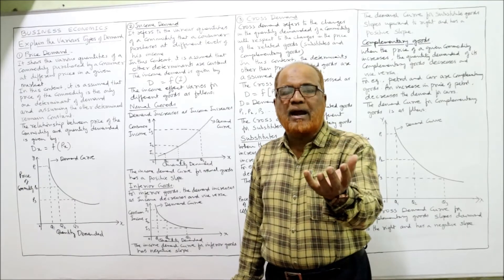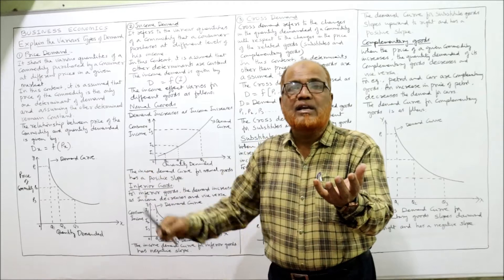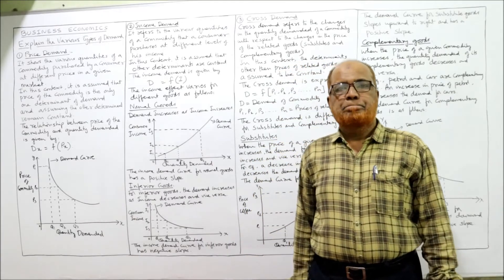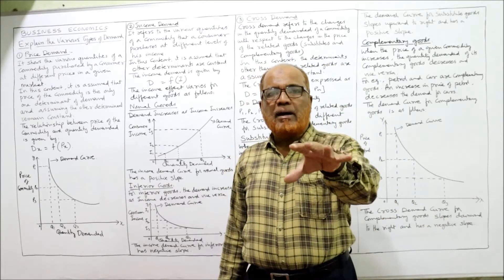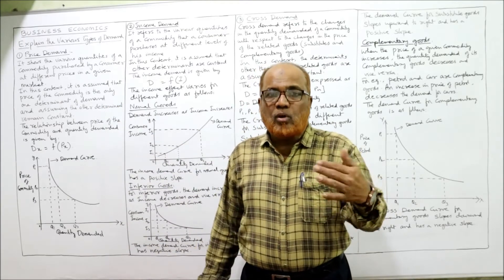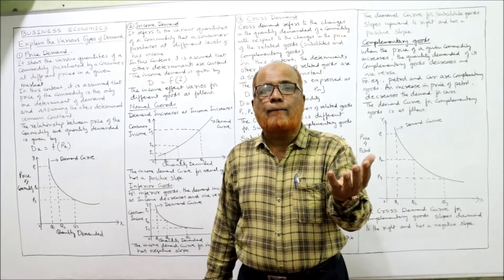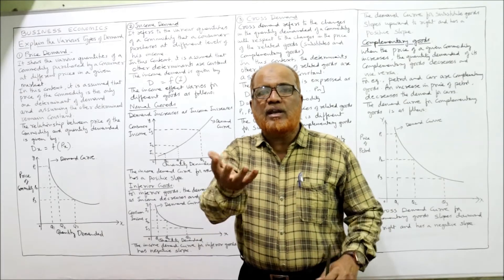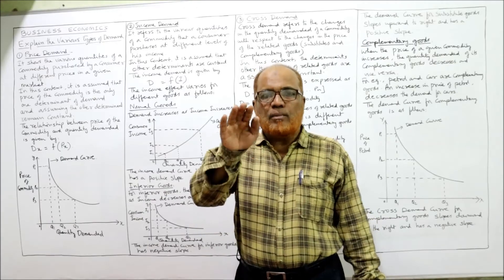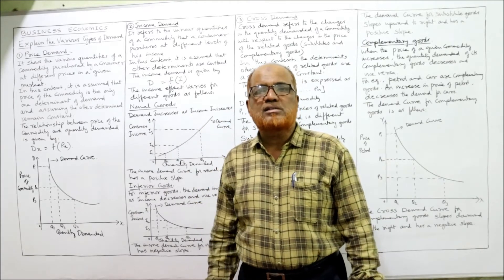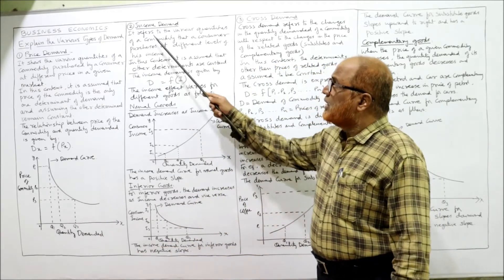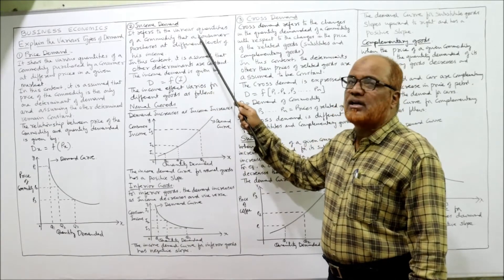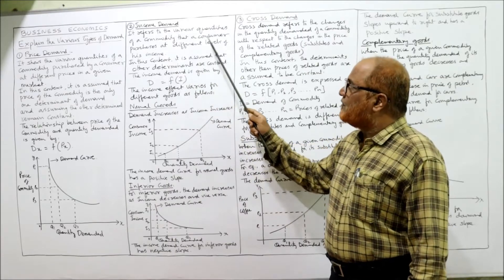The second type is income demand — what is the quantity demanded of a particular commodity at different levels of income. As explained previously, demand depends not only on price but also on income. Income demand refers to the various quantities of a commodity that a consumer purchases at different levels of income.